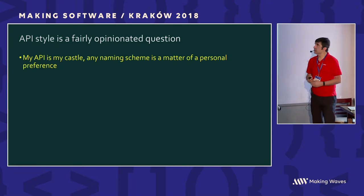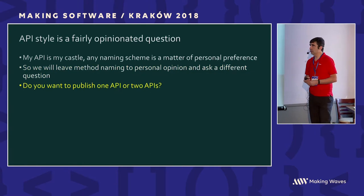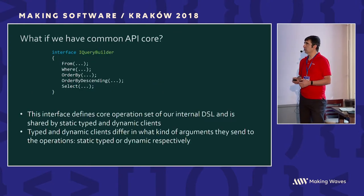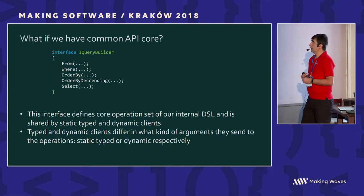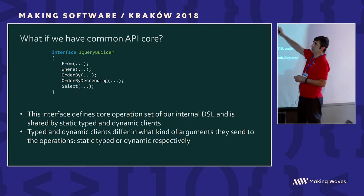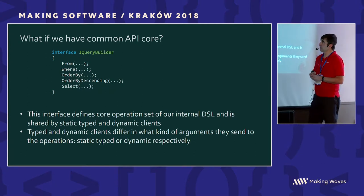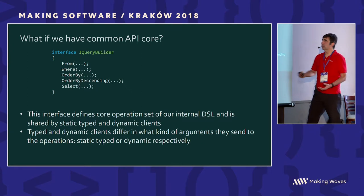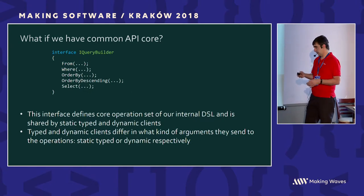Coming back to the database world — this is a LINQ expression. If you want to build an API that supports dynamic invocation, you can use the SimpleData approach: select company name and years established. There's no such method, but your dynamic provider will parse the string and make calls out of it. What I'll be showing is how to do it in a unified way — no matter whether you're using static or dynamic code, you use the same API with just a difference in how you obtain the entry point to your queries. The supported subset will be: from, where, order by, order by descending, and select.